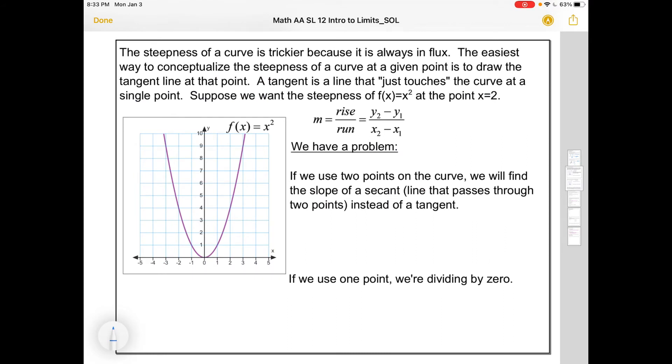But when we move to curves, slope is a little trickier, or steepness is trickier, because the steepness is always changing. Obviously, if you were on a roller coaster that did this parabolic thing here, the steepness would be changing at different moments. It's obviously steeper right here than it is, say, right here.